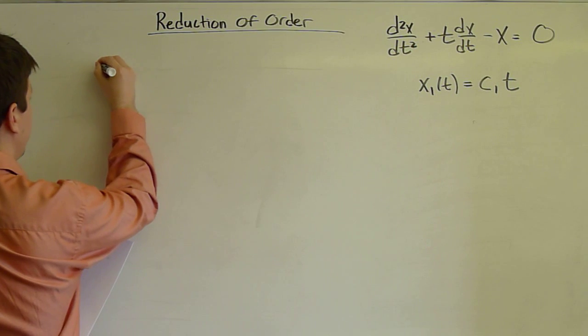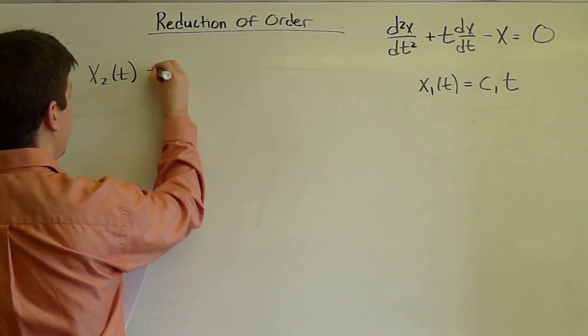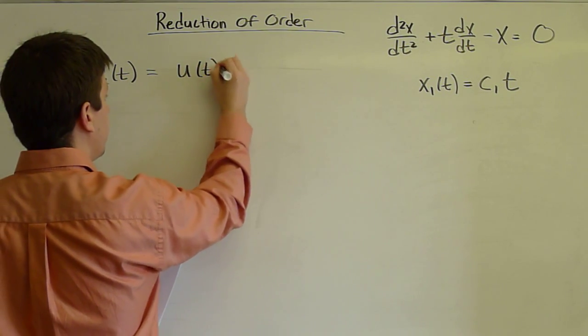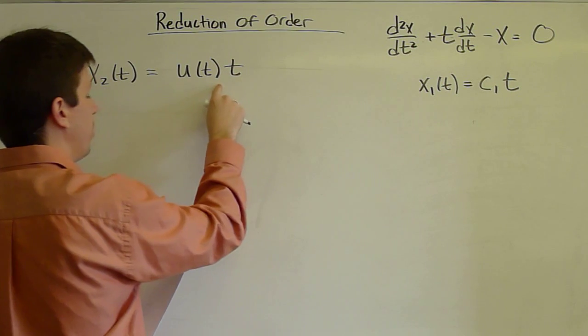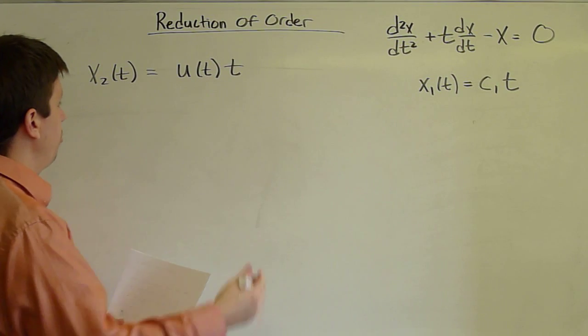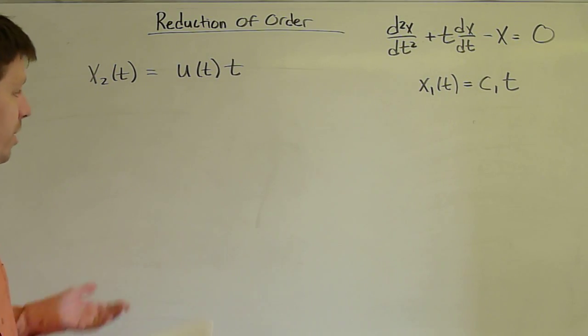We write a second solution x2 of t equals u of t times t, an unknown function times the given homogeneous solution. And just like in variation of parameters, this seemingly nonspecific guess, because any function can be written this way.